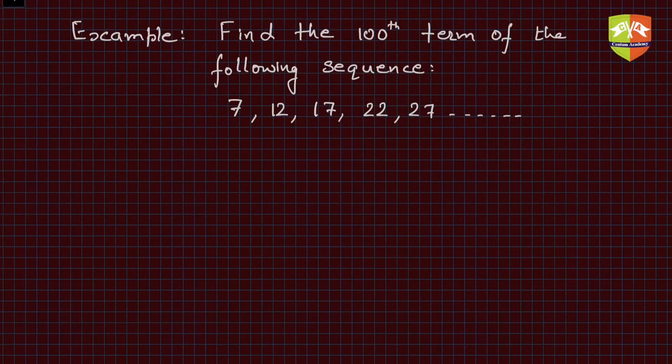Welcome friends, we are going to take up one example problem to see and understand whatever we learned in the previous session. The question says find the 100th term of the following sequence: 7, 12, 17, 22, 27... Let's say we do not have any idea of what kind of sequence it is.